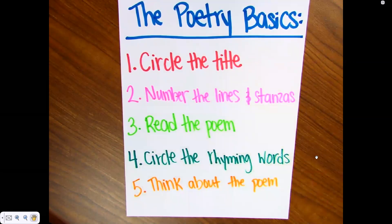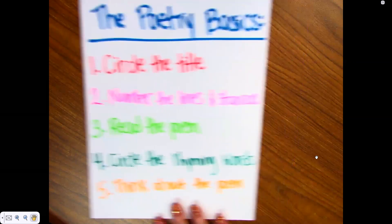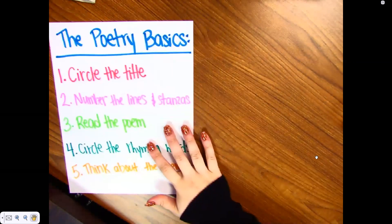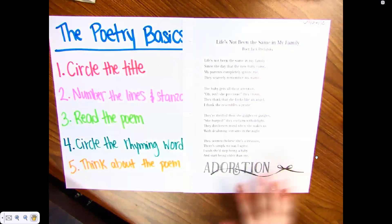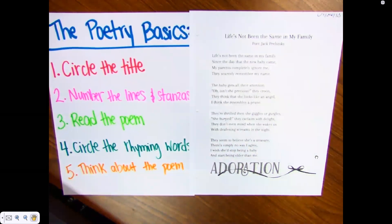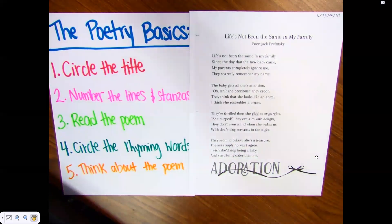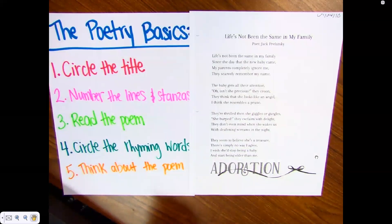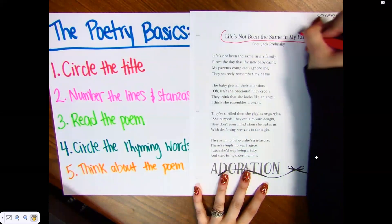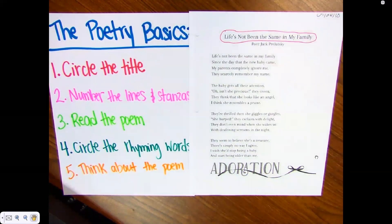Now I'm going to show you how we would do our poetry basics. I have a poem for us. It is called "Life's Not Been the Same in My Family" by Jack Prelutsky. So, I'm just modeling for right now, meaning I'm showing you what I want you to do with this poem. The first thing I'm going to do is circle the title — "Life's Not Been the Same in My Family."